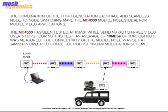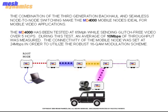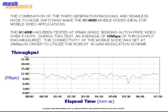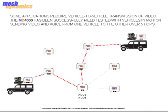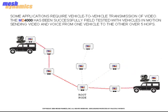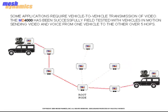The combination of the third generation backhaul and seamless node-to-node switching make the MD-4000 mobile nodes ideal for mobile video applications. The MD-4000 has been tested at 65 mph while sending glitch-free video over 5 hops. During this test, an average of 10 Mbps of throughput was measured. The connectivity of the mobile node was set at 24 Mbps in order to utilize the robust 16QAM modulation scheme. Some applications require vehicle-to-vehicle transmission of video; the MD-4000 has been successfully field tested with vehicles in motion, sending video and voice from one vehicle to another over 5 hops.